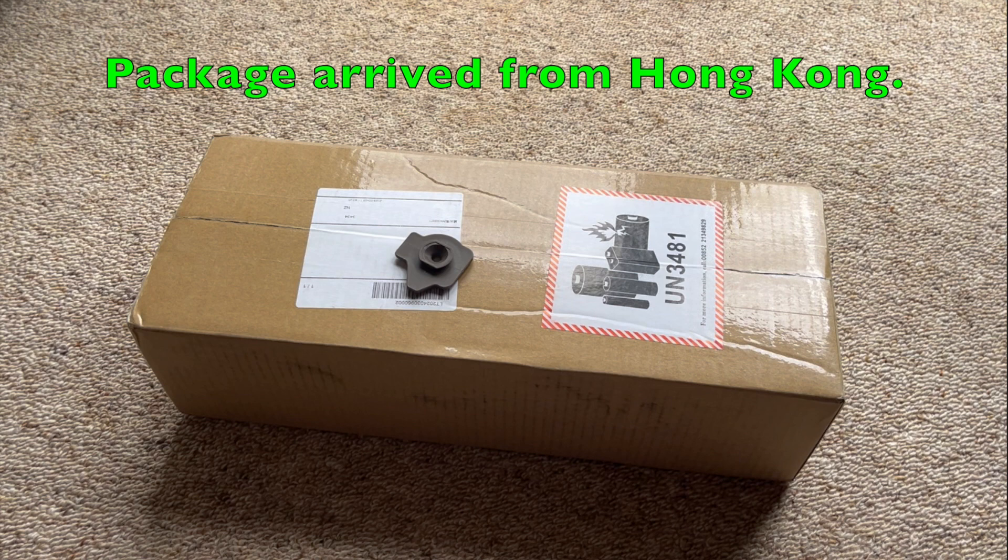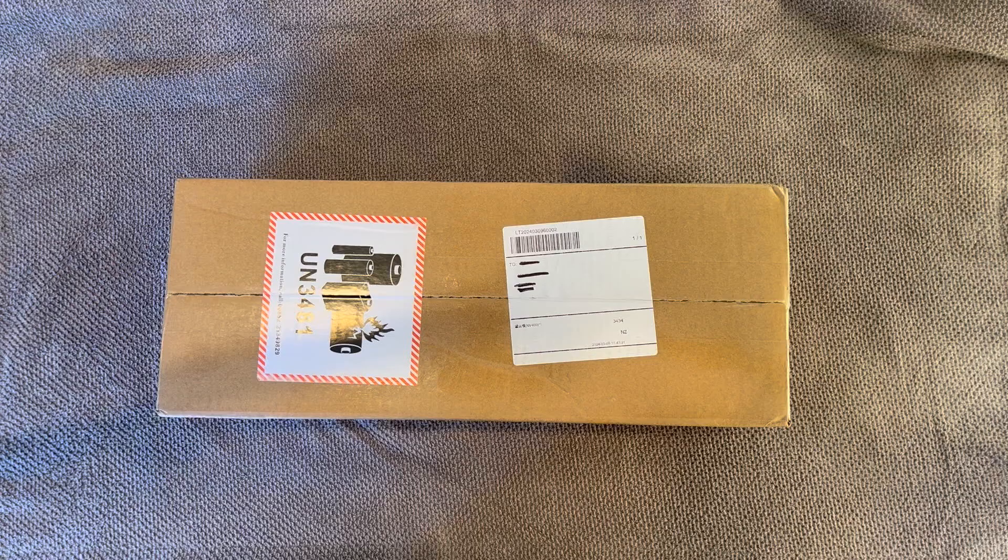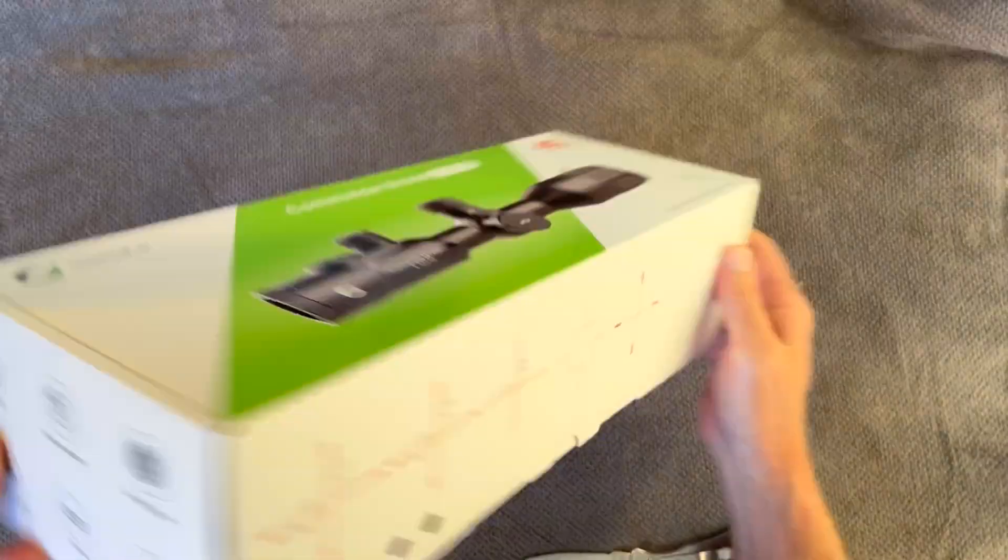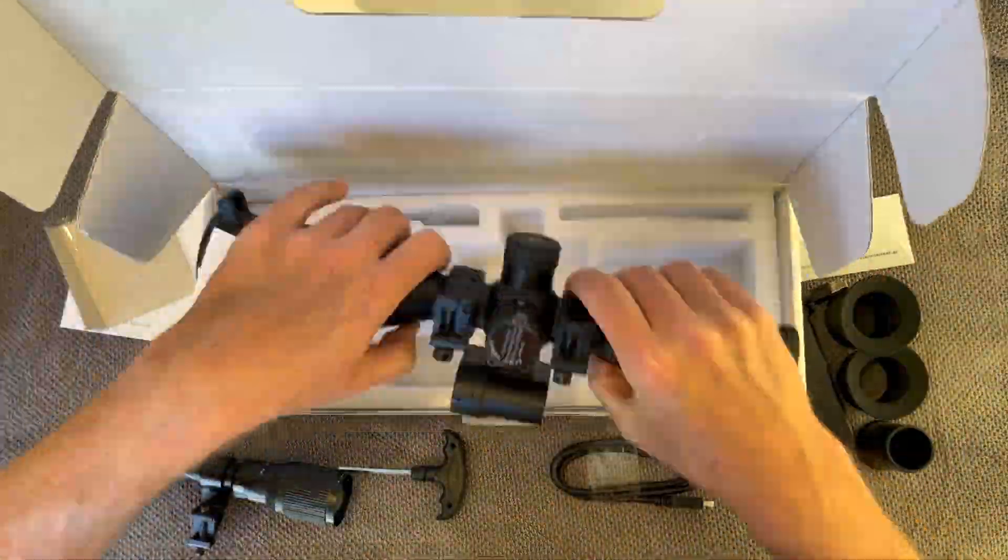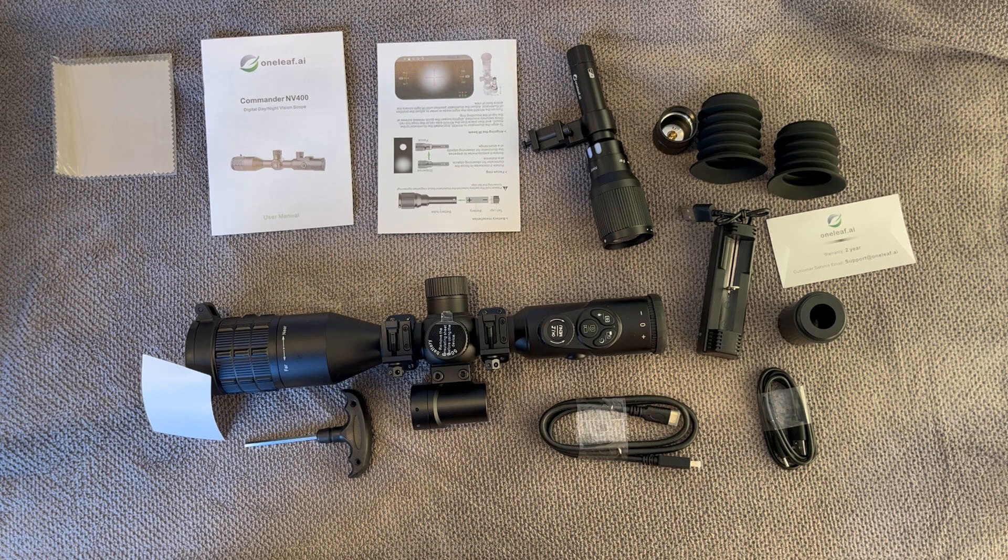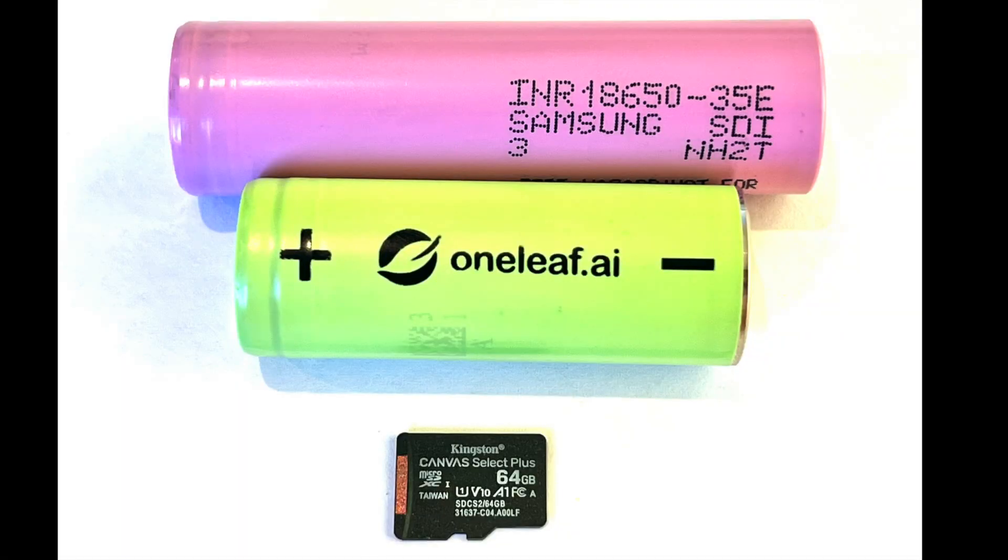A week or so after agreeing to review their scope, a package arrived from Hong Kong. I don't do unboxing videos, but here's the fastest unboxing video you'll ever see. And that's what you get in the box. You get all the batteries you need and a micro SD card all included in the box. And Samsung and Kingston are both very reputable brands, so they're not sending you junk.